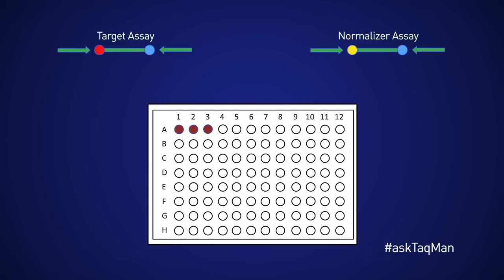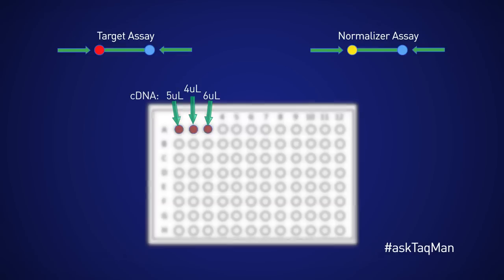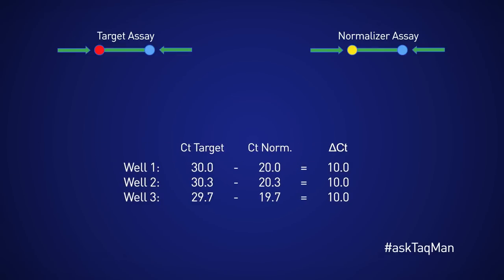The second reason is better precision in gene expression experiments. If the target gene and normalizer are in the same tube, it won't matter if the volume of sample pipetted is a bit off among replicates, as long as delta CT values are calculated by normalizing the target CT to the normalizer CT for each well individually. This leads to delta CT values among replicates being highly precise, so the average delta CT can be expressed with great confidence.